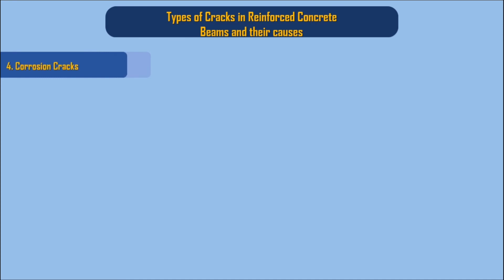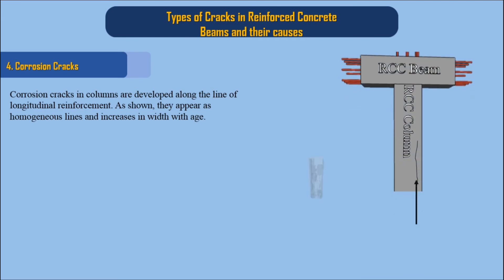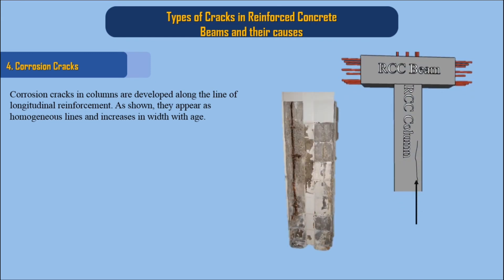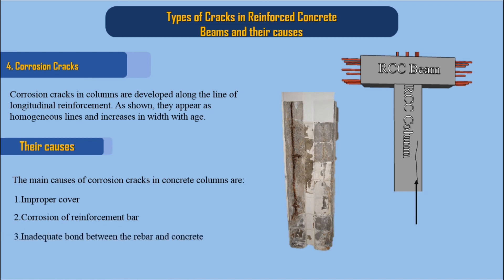4. Corrosion Cracks. Corrosion cracks in columns are developed along the line of longitudinal reinforcement. As shown, they appear as homogeneous lines and increase in width with age. Their causes: the main causes of corrosion cracks in concrete columns are 1. Improper cover, 2. Corrosion of reinforcement bar, 3. Inadequate bond between the rebar and concrete.